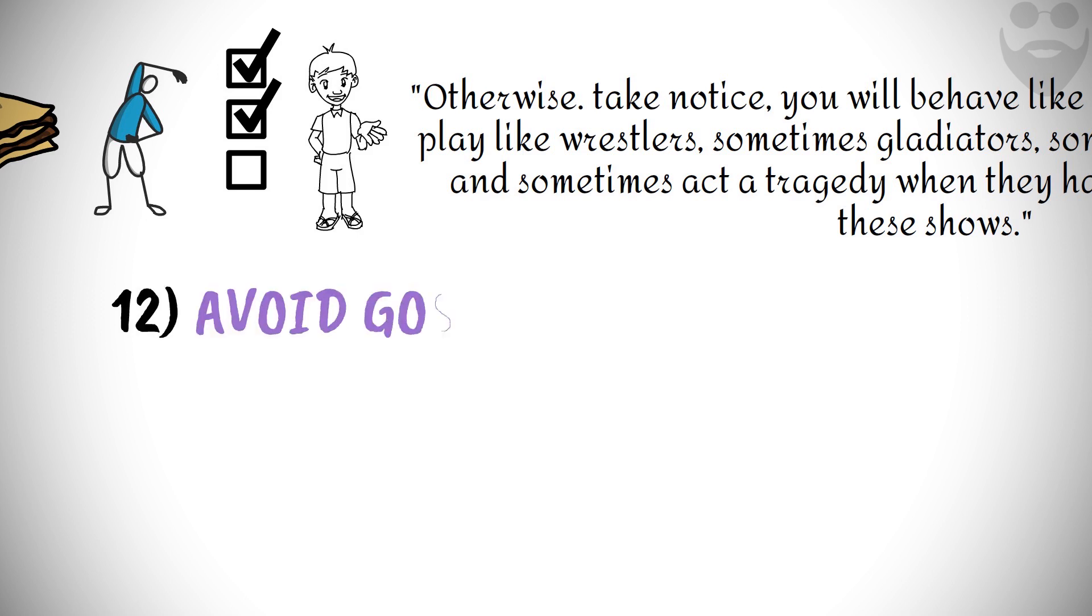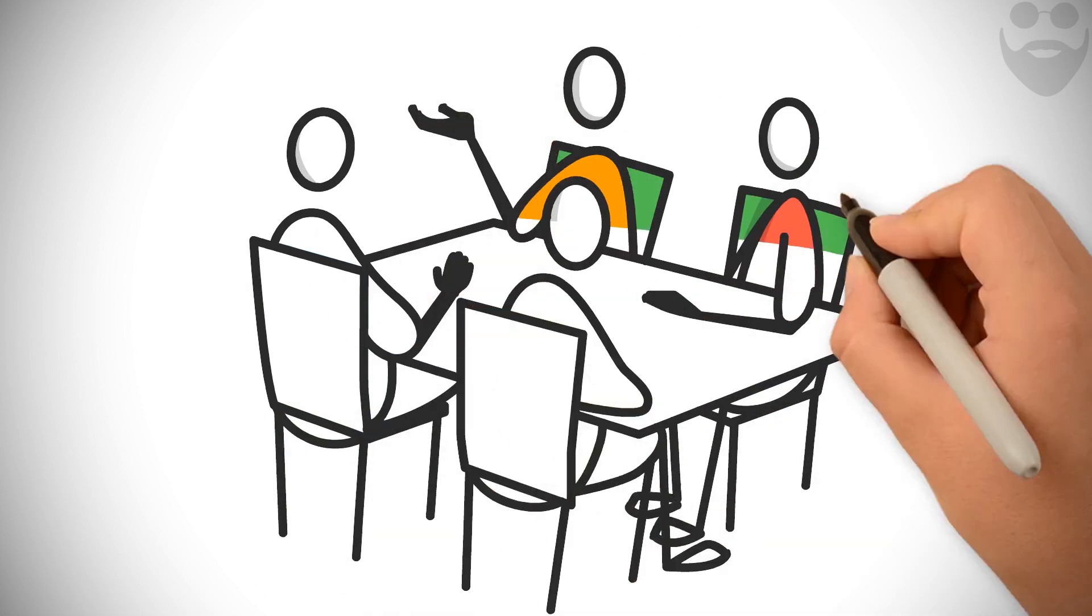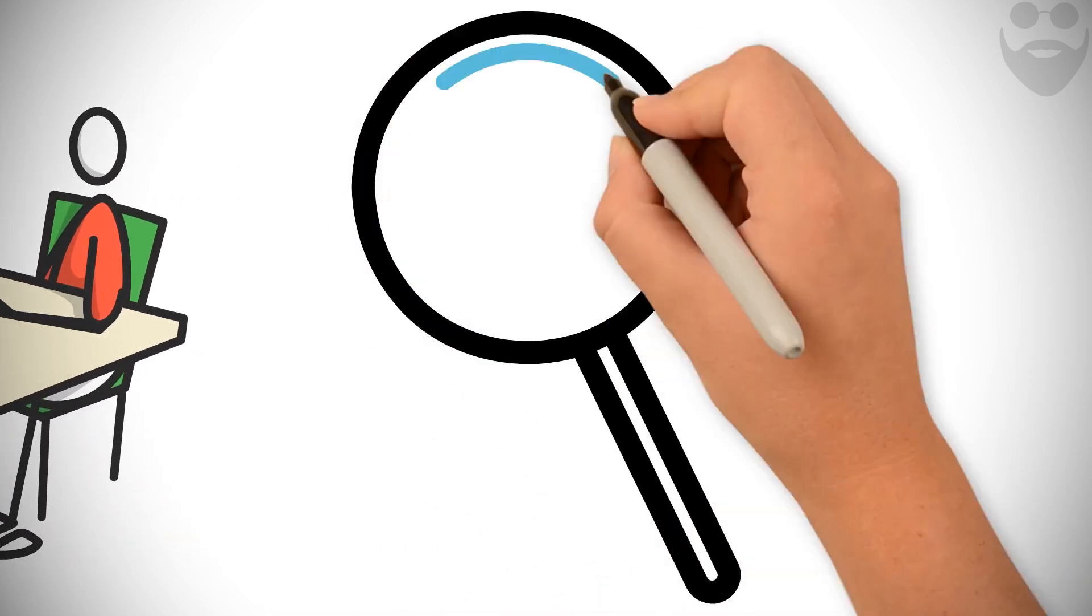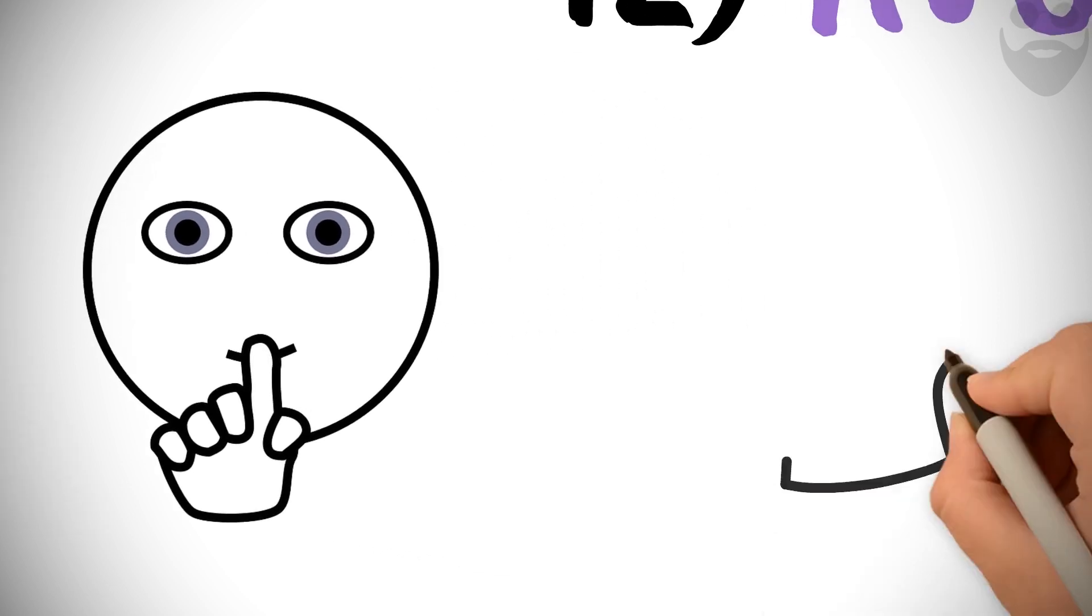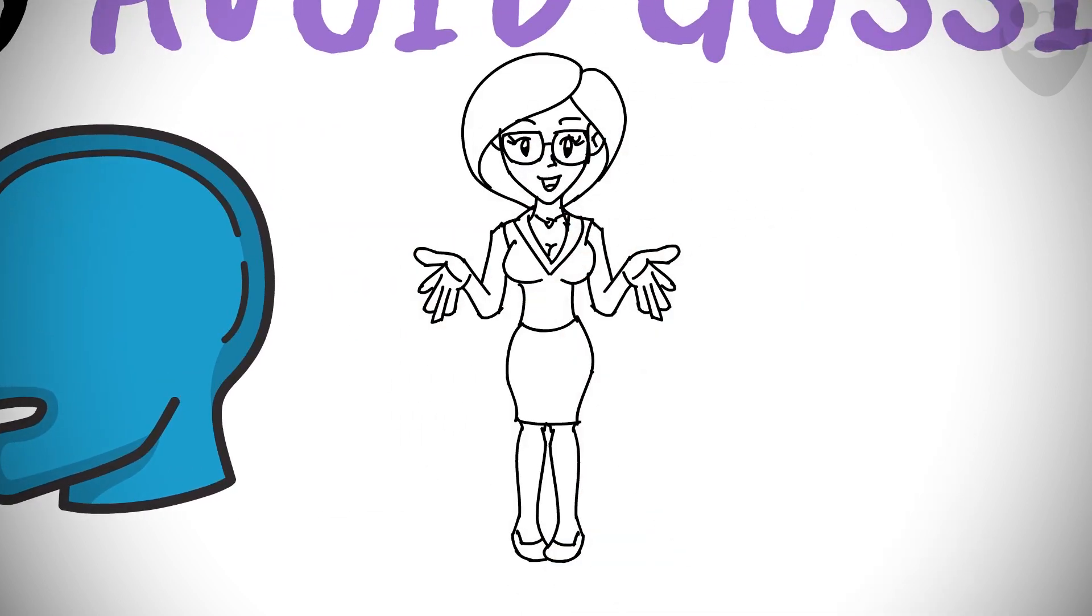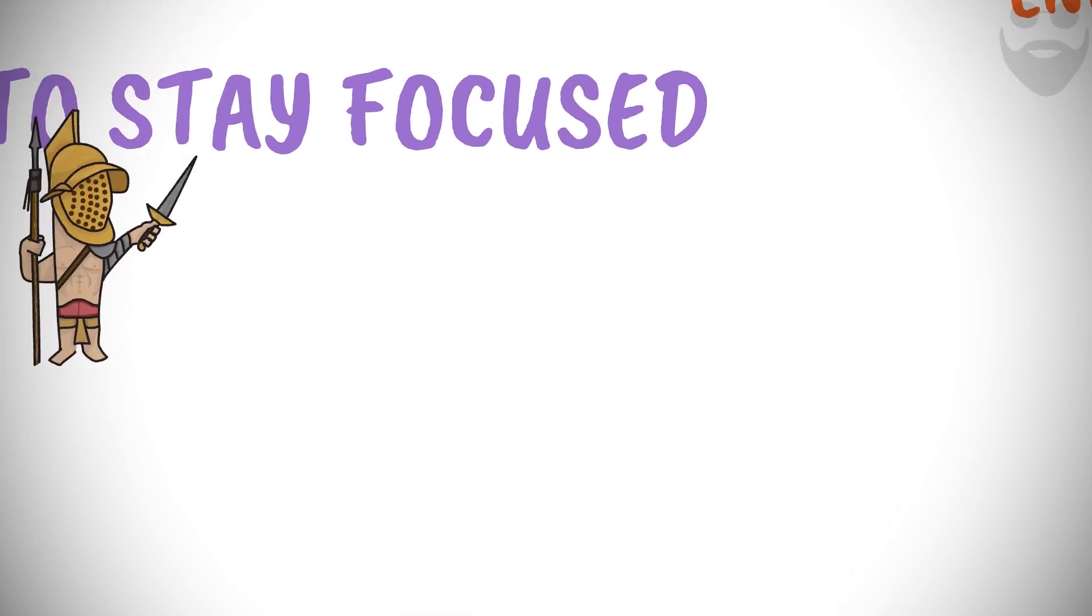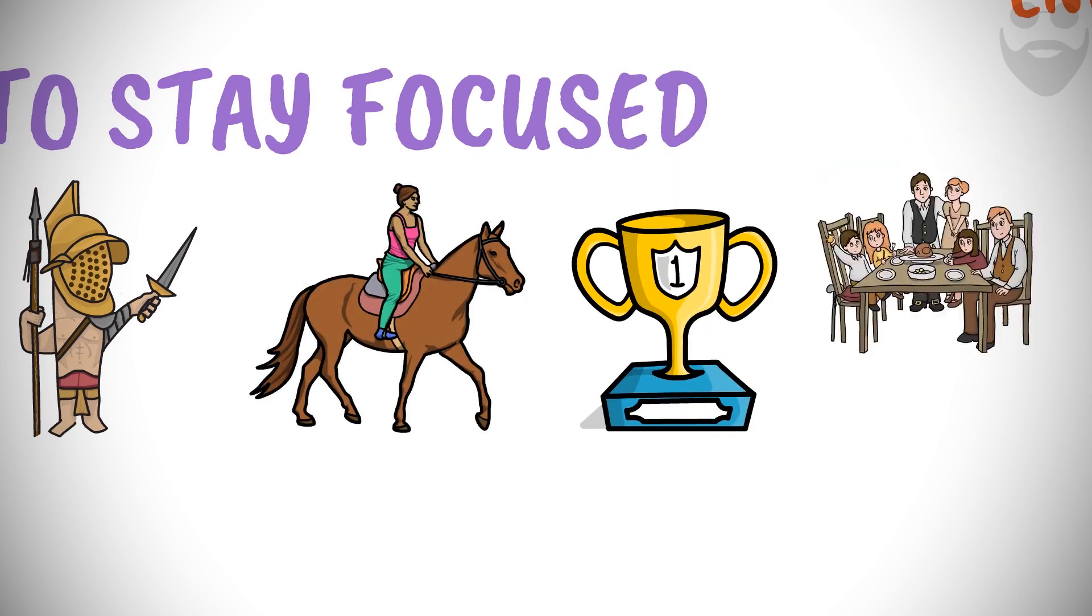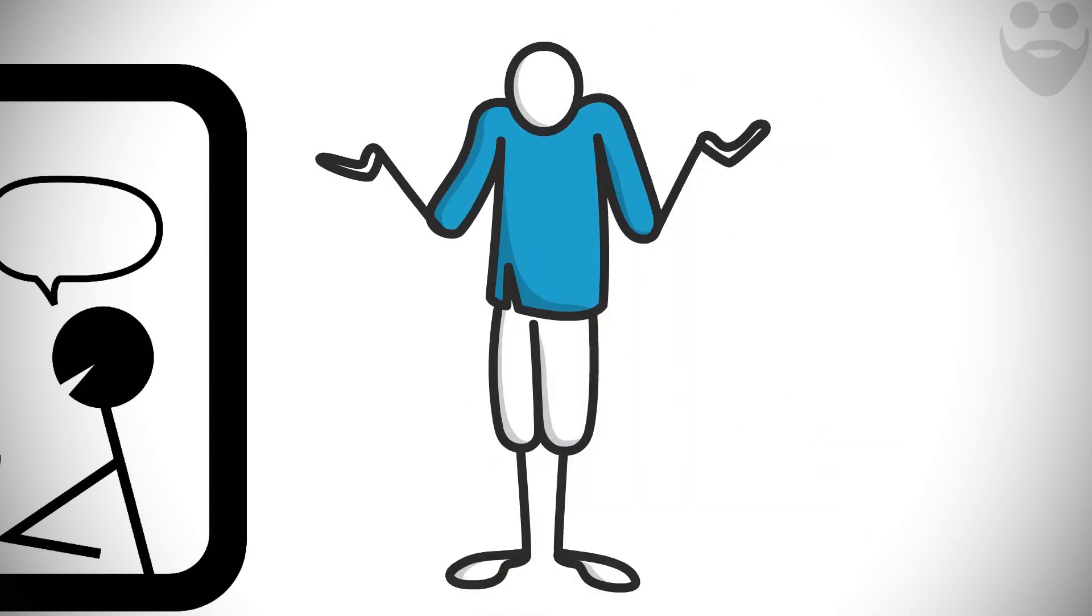12. Avoid gossip to stay focused. Don't waste your time in trivialities, such as useless gossip. Rather, stay focused on what's important. Epictetus advises, Be for the most part silent, or speak merely what is necessary, and in few words. We may, however, enter, though sparingly, into discourse sometimes when occasion calls for it, but not on any of the common subjects, of gladiators, or horse races, or athletic champions, or feasts, the vulgar topics of conversation, but principally not of men, so as either to blame, or praise, or make comparisons. Enchiridion 33.